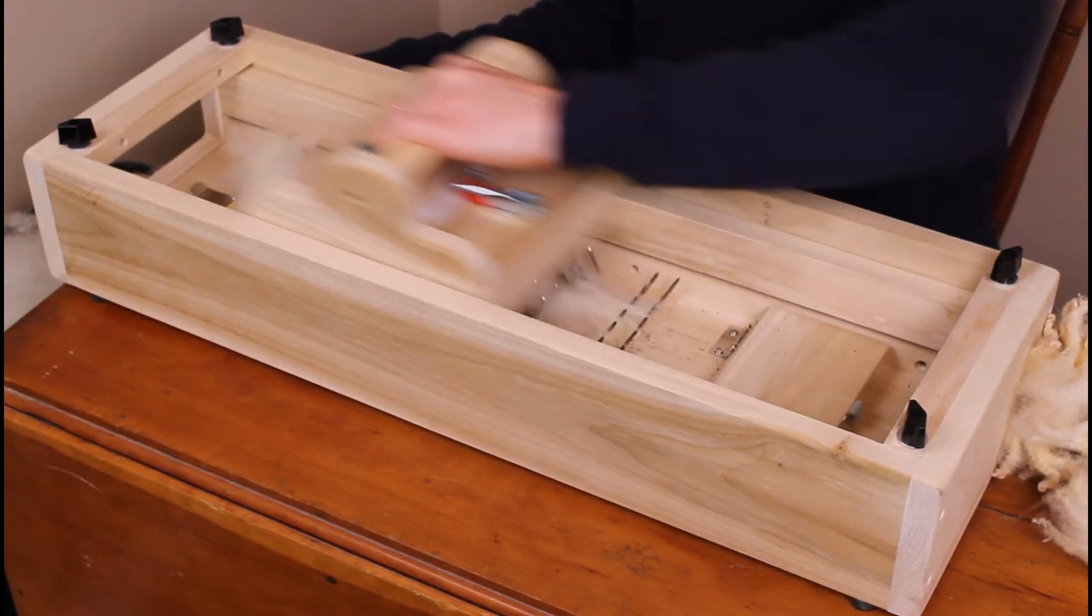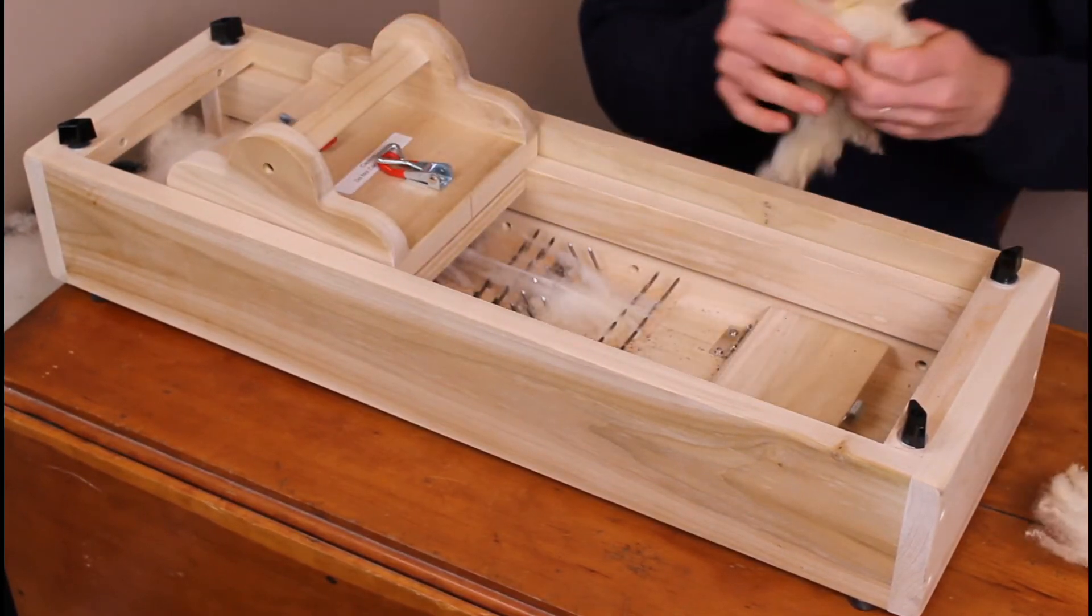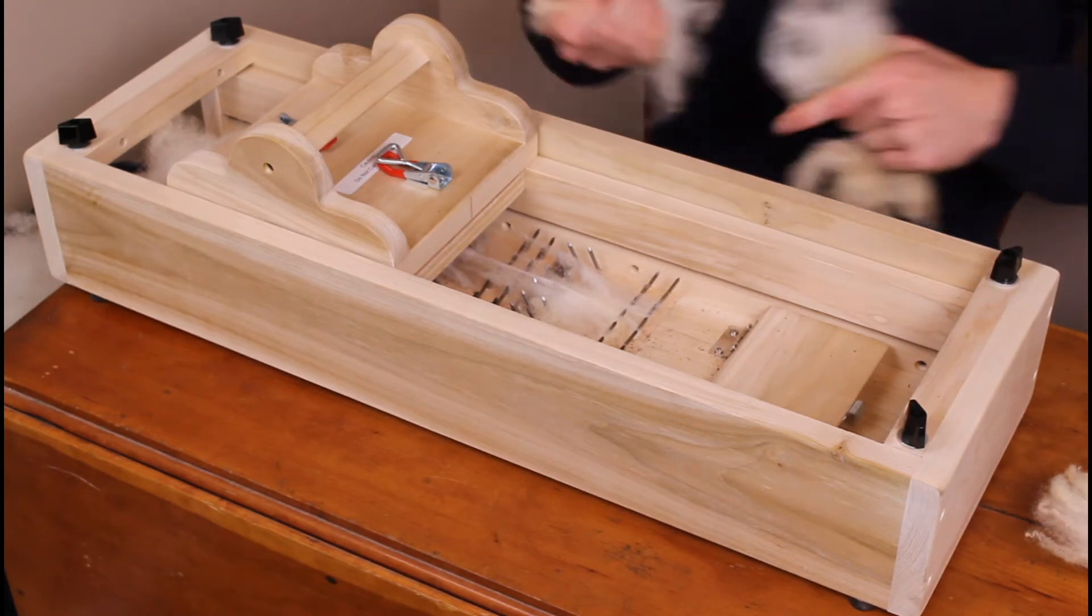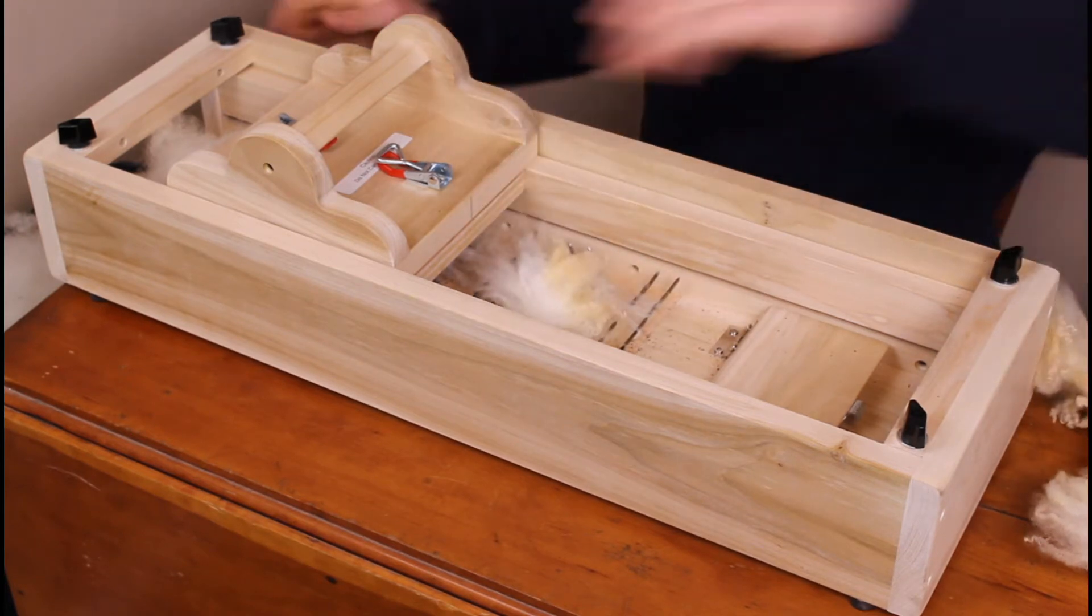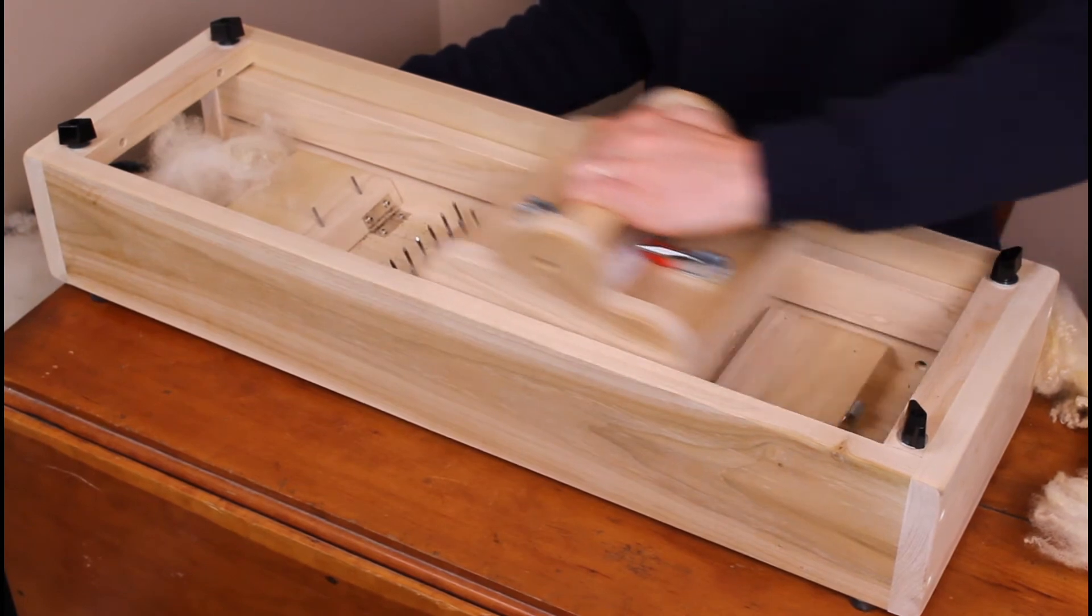A good place to start is to adjust the picker so that the points barely overlap on average about the thickness of a piece of paper. From there you can experiment with what works best for you.